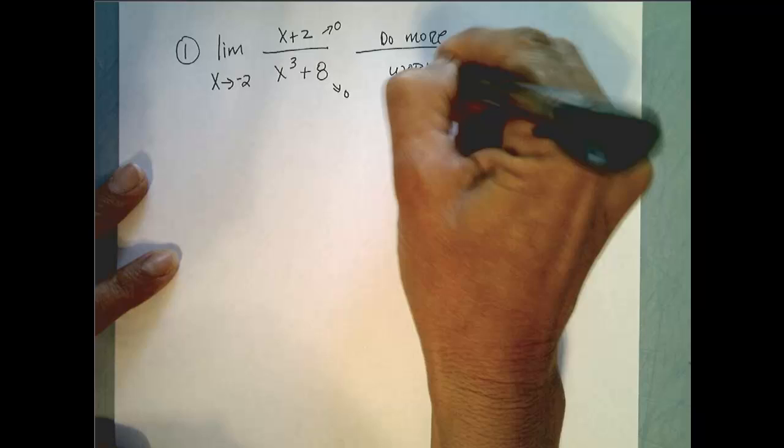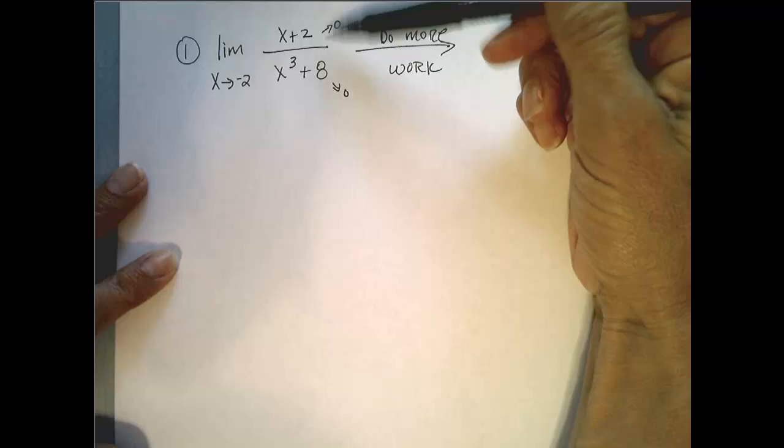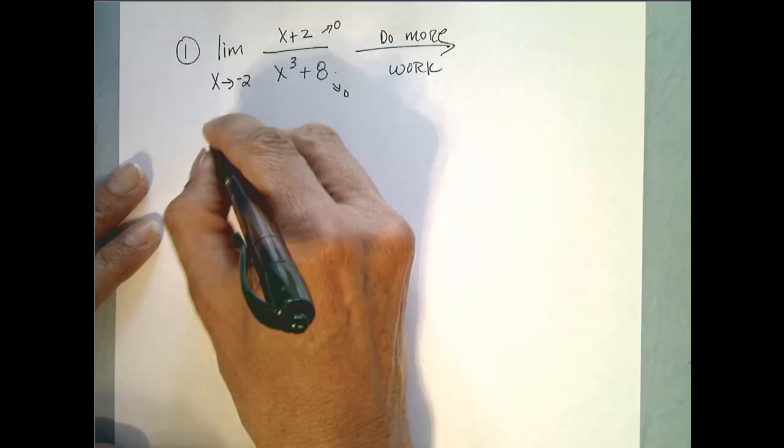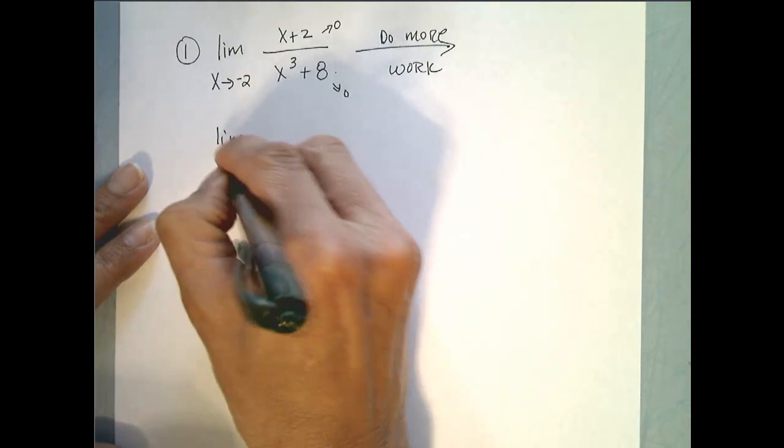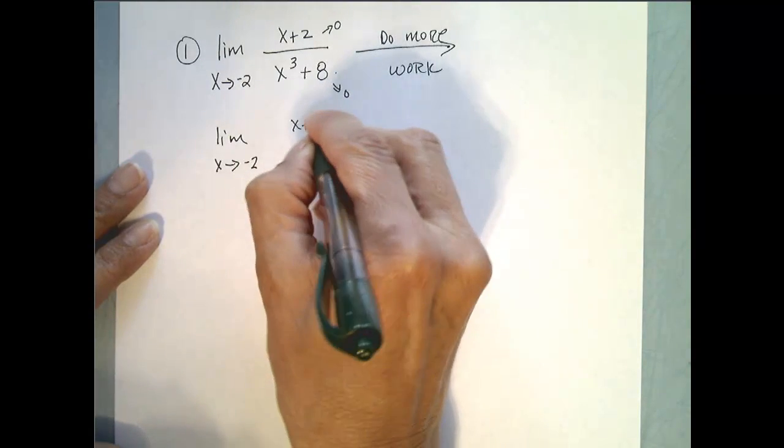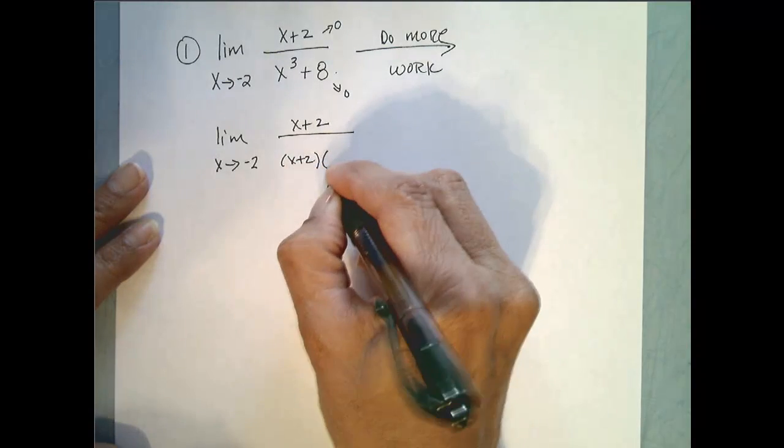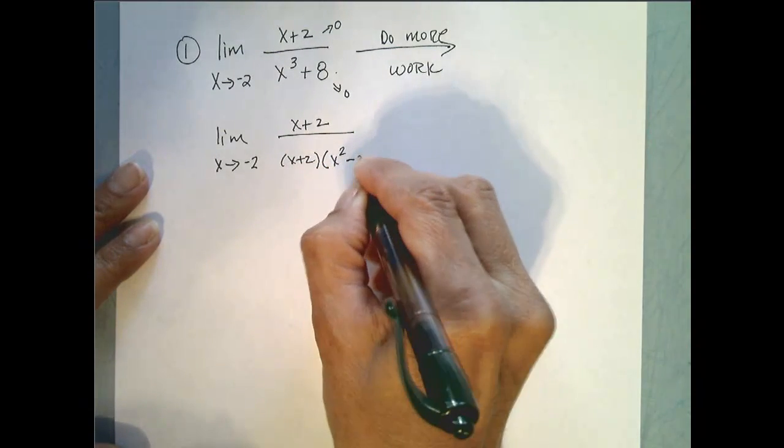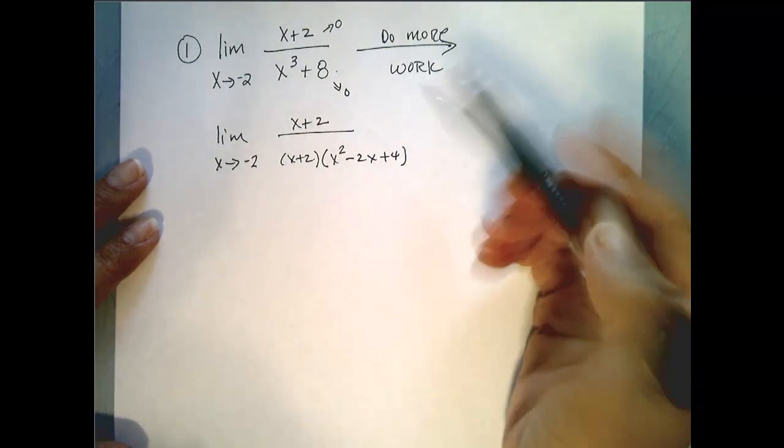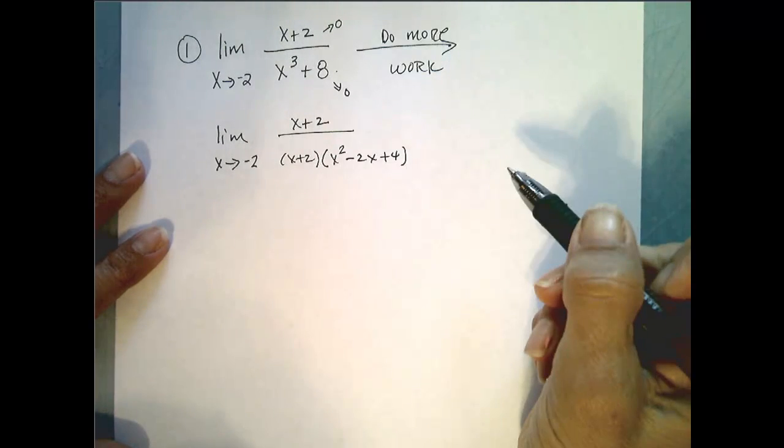And often, that is some kind of algebraic simplification. So if we can see the top is already factored, we look at the bottom and we recognize that that is the sum of two cubes. So we factor that. So this limit is equal to the limit as x goes to negative 2 of x plus 2 over x plus 2 times x squared minus 2x plus 4. That's the formula for the sum of two cubes, which if you need to review that, you can easily find some examples of that.